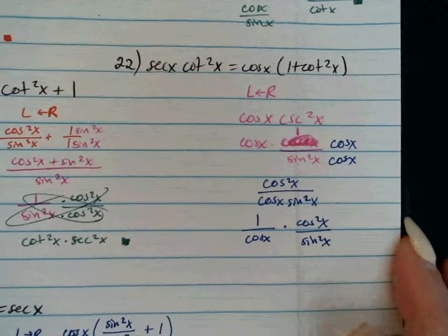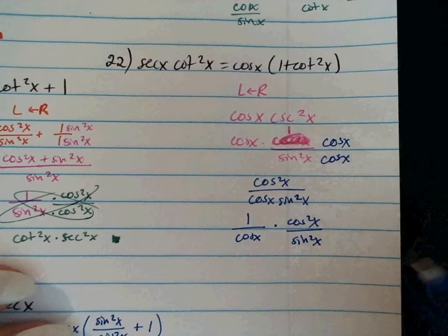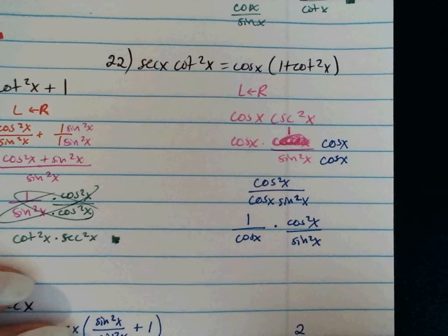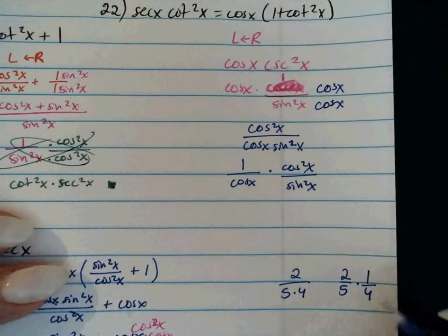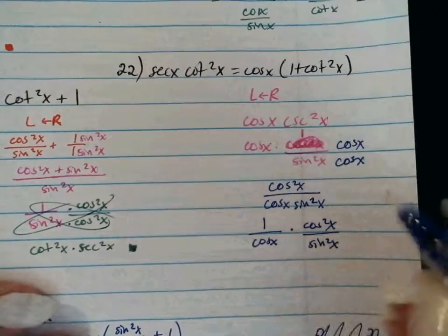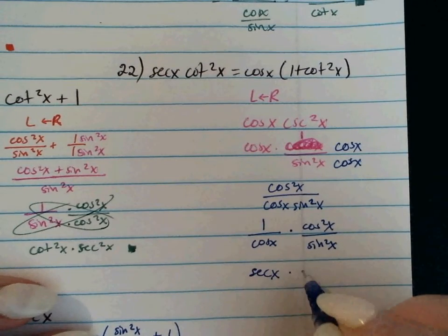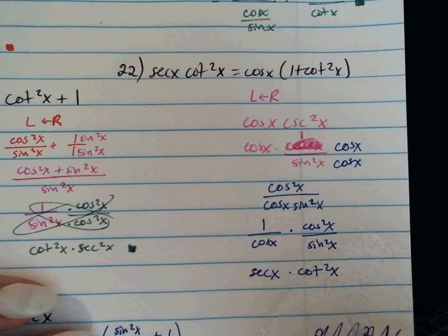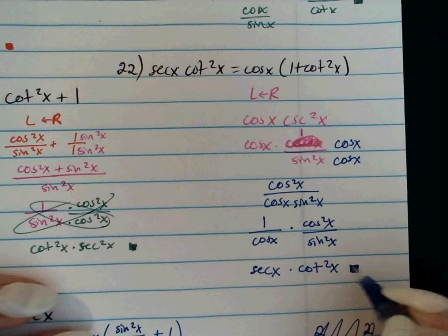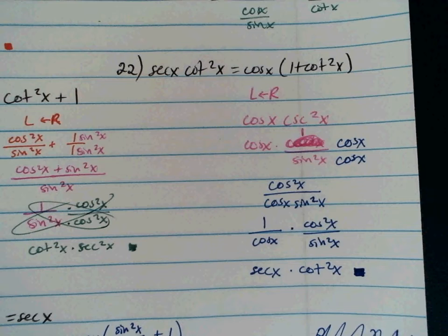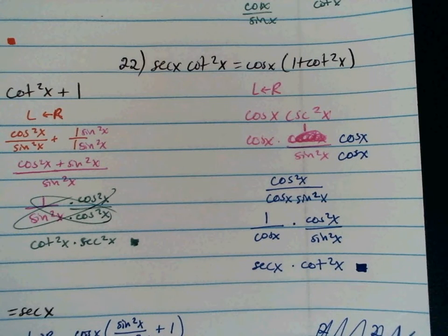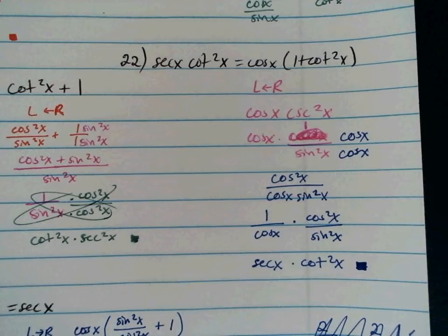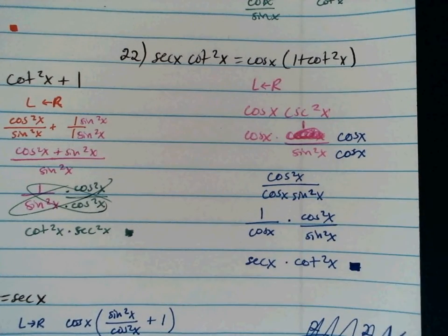Splitting that up — not with addition or subtraction, but just breaking the fraction — it's like saying 2 over 5 times 4 is the same as 2 fifths times 1 fourth. That's just how multiplication works with fractions. So 1 over cosine is secant, and cosine squared over sine squared is cotangent squared. You could also work through it with sines and cosines, but I wouldn't touch the left-hand side since creating addition or subtraction is annoying.